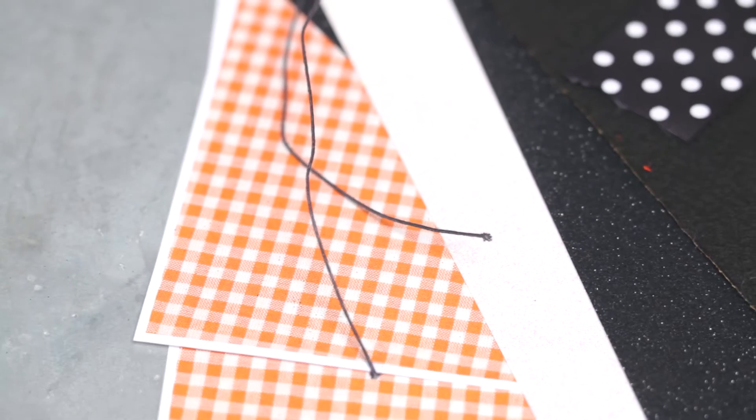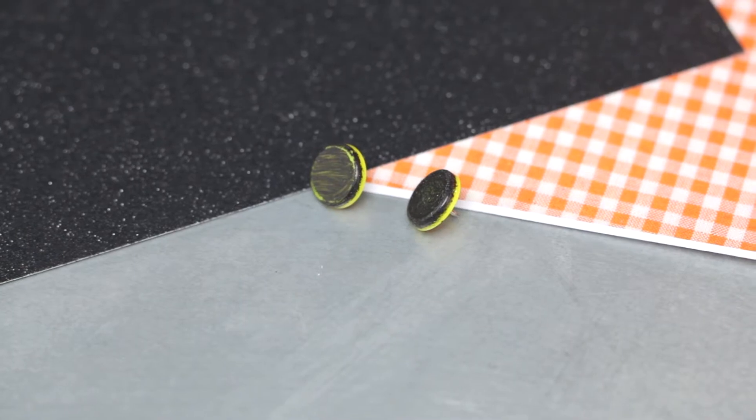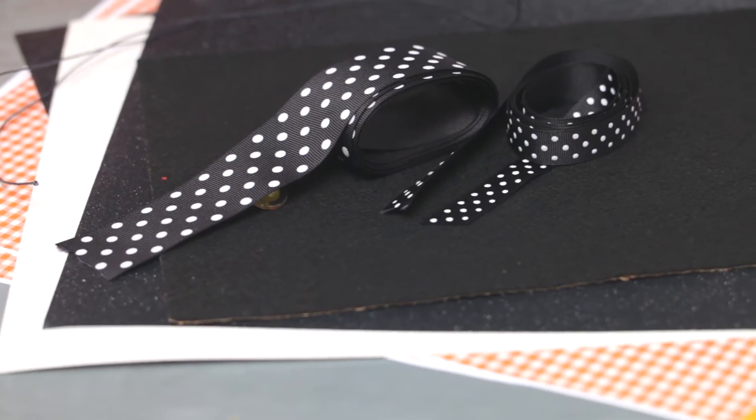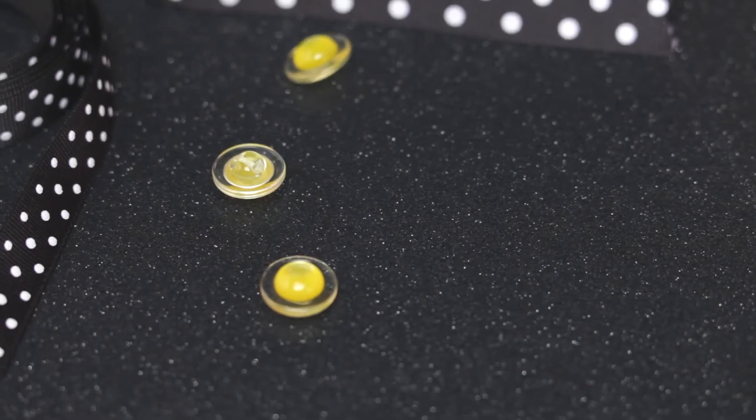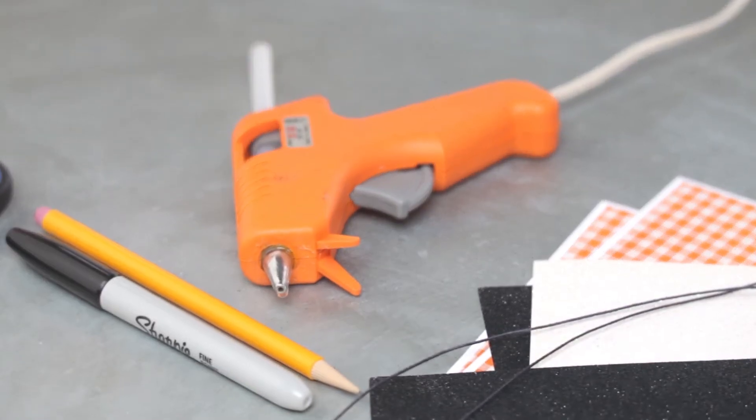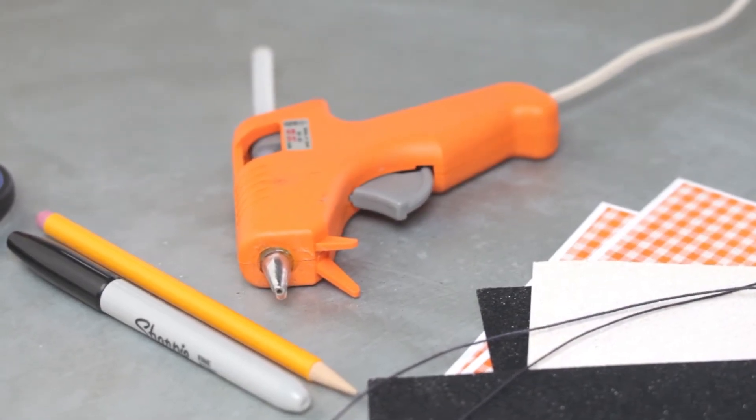Glitter cardstock in black and white, black coated wire, black thumbtacks, ribbon in two widths, buttons, glue dots, scissors, a pencil, a felt tip marker, and a glue gun.